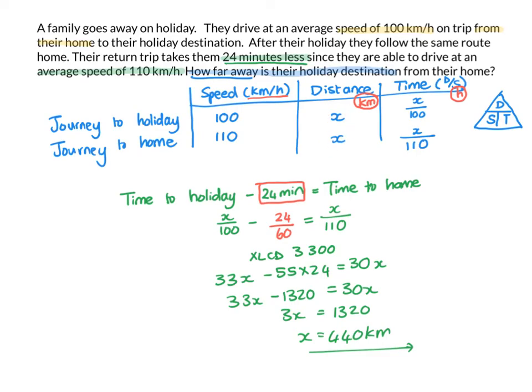And then I wrote my third category that I didn't yet know in terms of X. Then I could set up an equation because I know that the time to the holiday minus 24 minutes will give me my time home. This lands up with an equation with a fraction. So, I multiplied by my lowest common denominator and I got that X is 440 kilometers. So, that's a strategy you can help to use yourself to help you solve questions that have speed, distance and time.